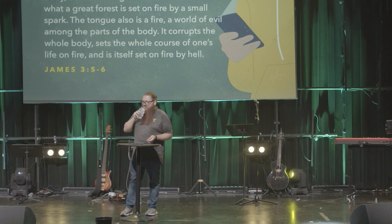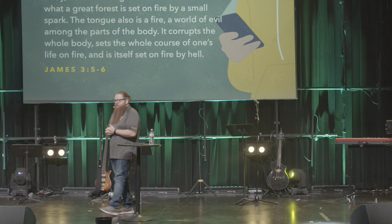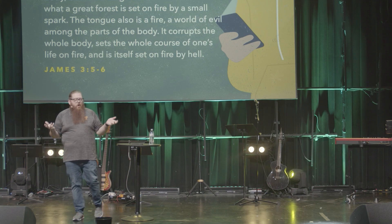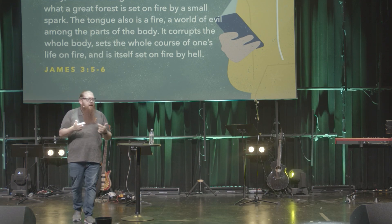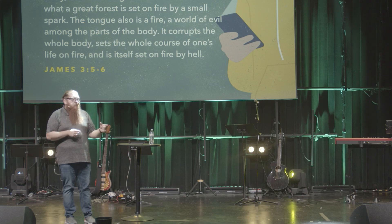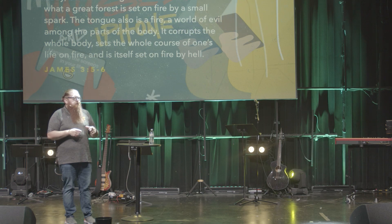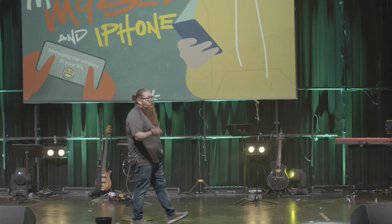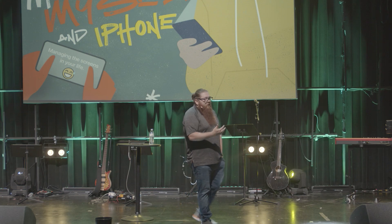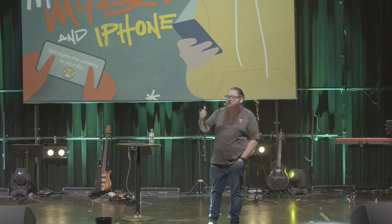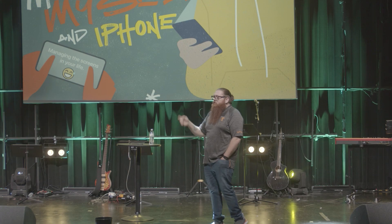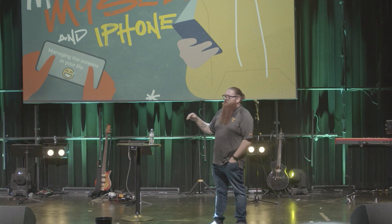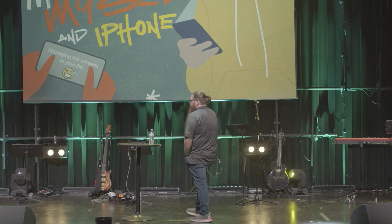Not exactly a nice verse, right? James is basically saying your tongue — it's not exactly a big part of your body, but it's one of the most powerful parts of your body. Just like a spark is a small part of a fire, but that's what starts the fire. In this letter, whoever James is writing to, they have a problem with the words they use — he talks about it in chapters one, two, and three. He brings it up multiple times that the words they're using are coming straight from hell.